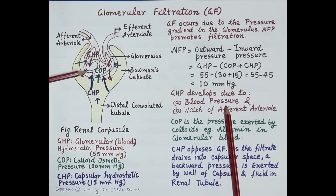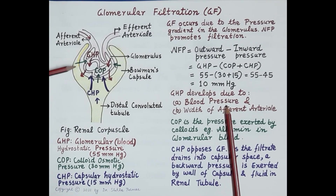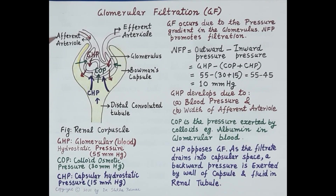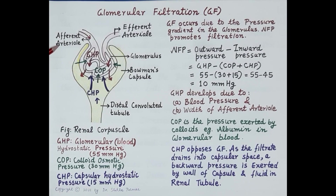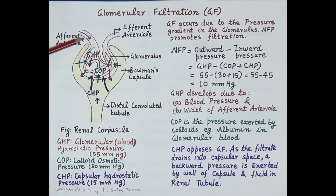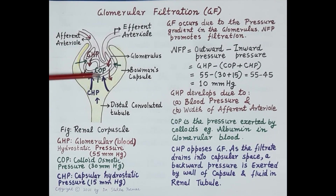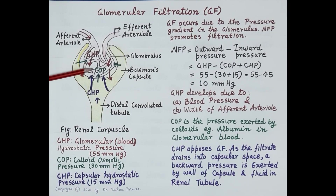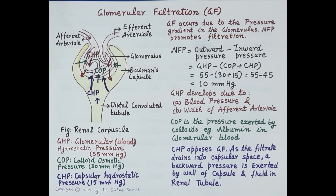Glomerular hydrostatic pressure also depends upon the width of the afferent arteriole. As shown in the diagram, the diameter of the afferent arteriole is greater than that of the efferent arteriole. Pressurized blood ejected from the heart enters the glomerulus through the relatively wide afferent arteriole and exits through the narrower efferent arteriole. This produces a pressure in the glomerulus responsible for filtration. This glomerular hydrostatic pressure, shown in red, supports filtration and is 55 mmHg.